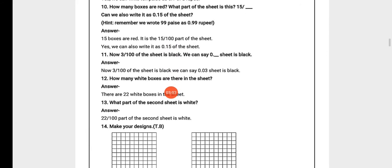Answer: 15 boxes are red. In the sheet we saw in the previous video, 15 boxes are red colour. It is the 15 upon hundredth part of the sheet. Yes, we can also write it as 0.15 of the sheet — हम उसे sheet का 0.15 portion बोल सकते हैं।